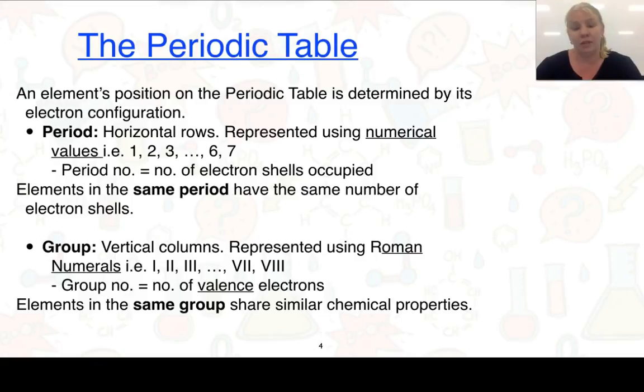Groups are our vertical columns. They're represented using Roman numerals, and the group number is the number of valence electrons. So if you think back, valence electrons are the number of electrons in the outside shell. And elements in the same group share similar chemical properties.